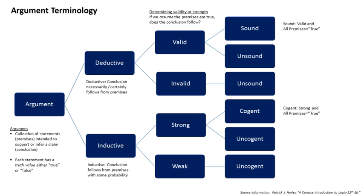In logic and philosophy, an argument is a series of statements in a natural language, called the premises (or premisses — both spellings are acceptable), intended to determine the degree of truth of another statement, the conclusion. The logical form of an argument in a natural language can be represented in a symbolic formal language, and independently of natural language, formally defined arguments can be made in math and computer science.